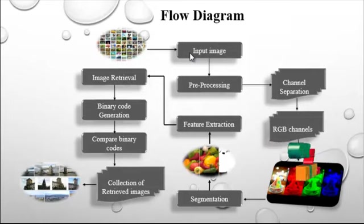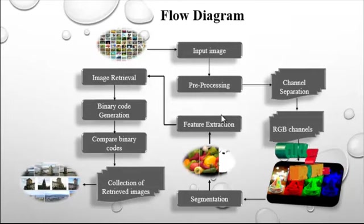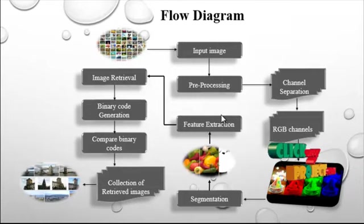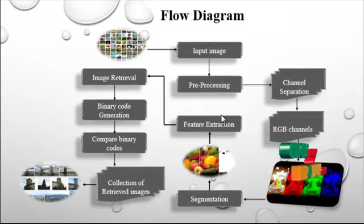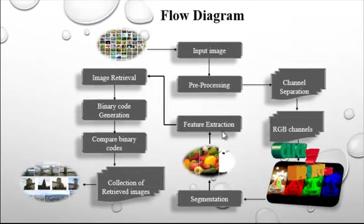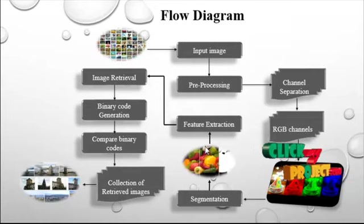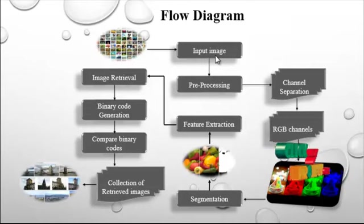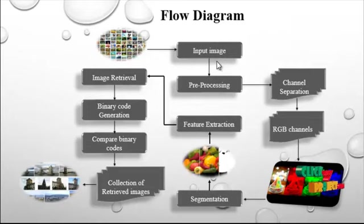At the input image stage, images are taken from the dataset and the selected image is subjected to pre-processing. The aim of pre-processing is to improve the image data by suppressing unwanted distortions or enhancing image features important for further processing. The input image is resized to 256x256 for processing. Likewise, all images in the dataset are pre-processed. The pre-processed image may still have noise which should be removed for further processing.